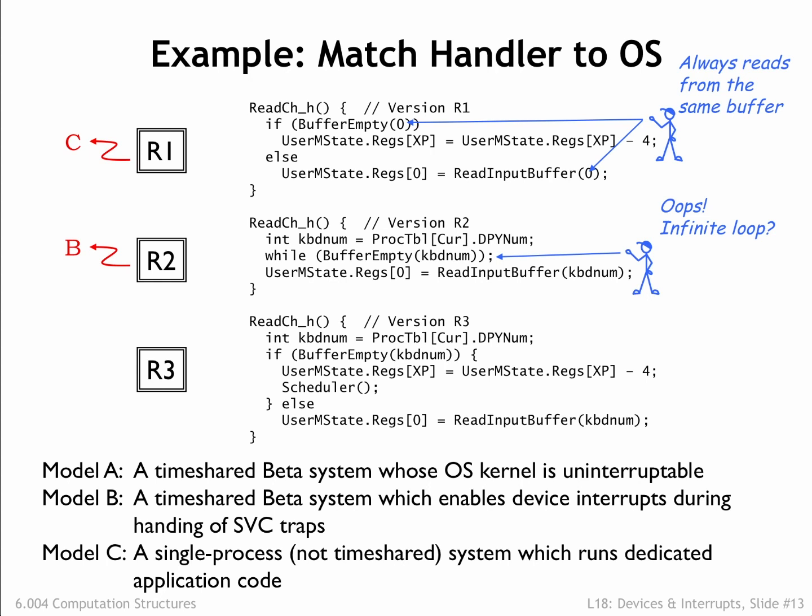By the process of elimination, that leaves the R3 handler to be paired with the Model A system. R3 is attempt 3 from the previous section, and is designed for our standard system in which the kernel is uninterruptible.